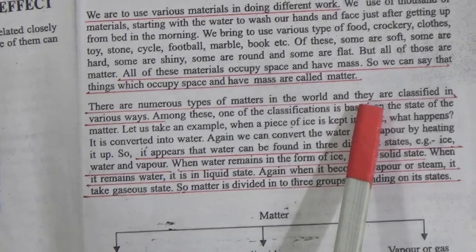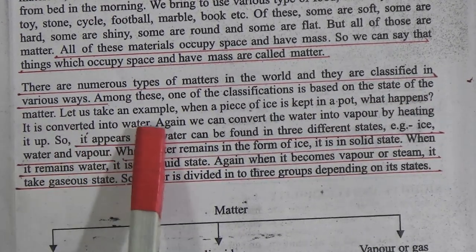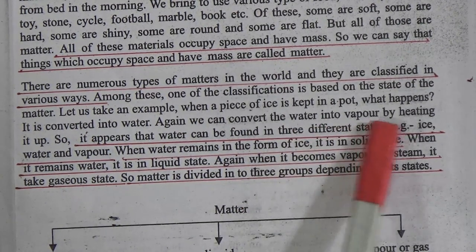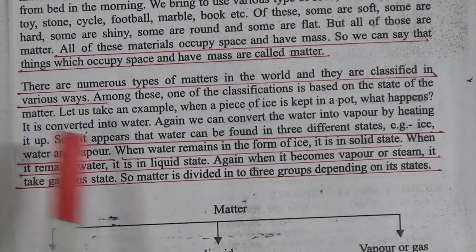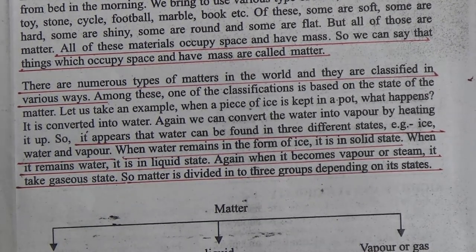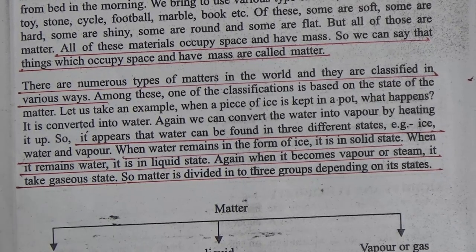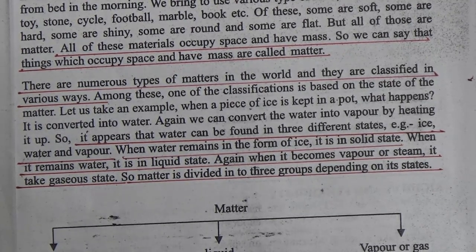There are numerous types of matter and they are classified in various ways. One classification is based on the state of matter. When a piece of ice is kept in a pot, it converts into water. We can convert water into vapor by heating it. So water can be found in three different states: ice (solid), water (liquid), and vapor (gas). When we give heat to water, it becomes liquid; when it reaches boiling temperature, it becomes gaseous.